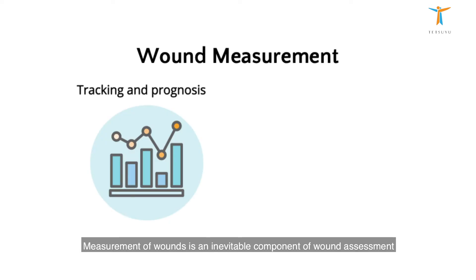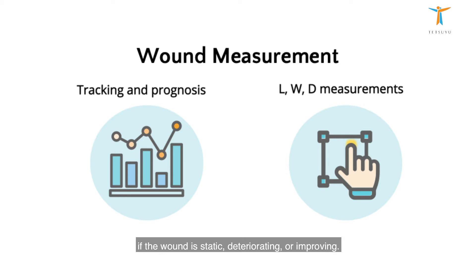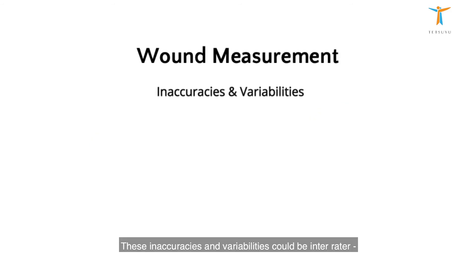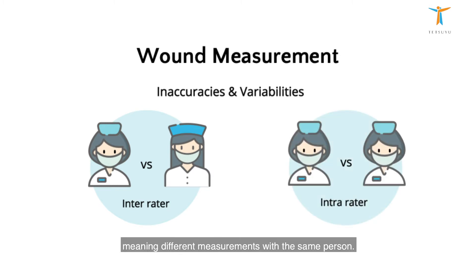Measurement. Measurement of wounds is an inevitable component of wound assessment and often the first baseline in tracking and prognosis. With length, width, and depth measurements, we are able to monitor healing rates objectively and determine if the wound is static, deteriorating, or improving. These inaccuracies and variabilities could be inter-rater, meaning between people measuring, or even intra-rater, meaning different measurements with the same person.